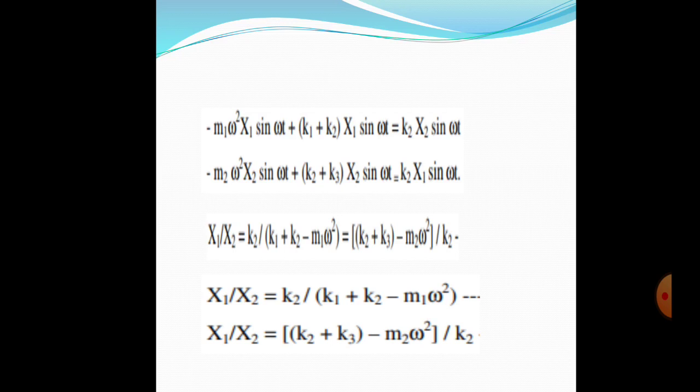The amplitudes we got are X1/X2 = K2/[(K1+K2) - M1·ω²]. We also got a second root: X1/X2 = K2/[(K2+K3) - M2·ω²]. These are the two roots available by solving these equations.